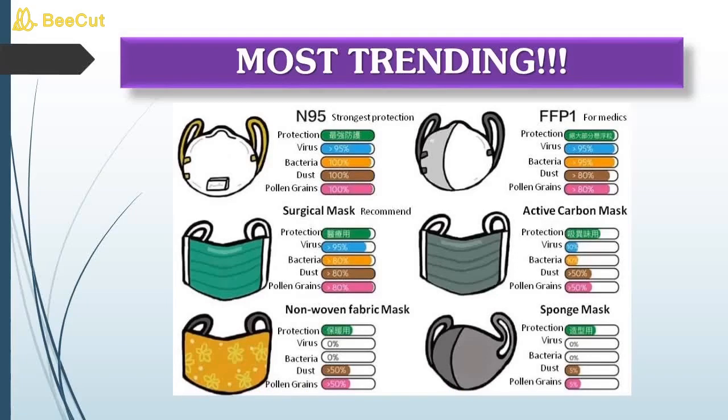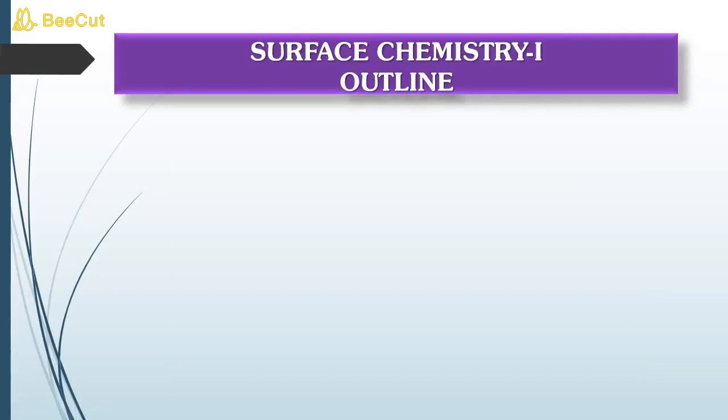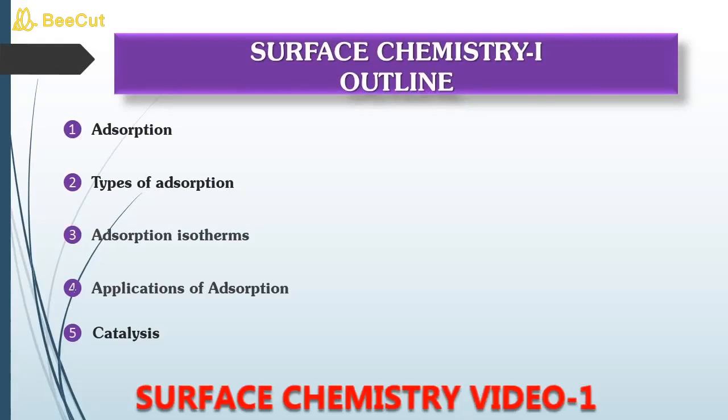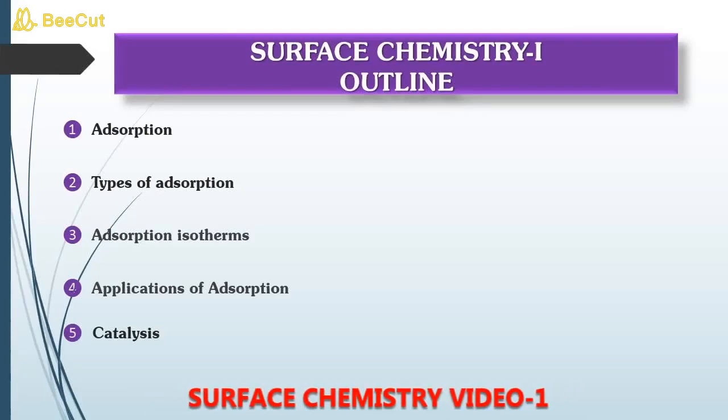Now students, let us have a small glimpse of what we are going to read under this topic. We have adsorption, catalysis, and colloids. In the first part of surface chemistry, we are going to read about adsorption and catalysis. And then we are going to see adsorption isotherms, then applications of isotherms. Catalysis, last but not least enzyme catalysis.